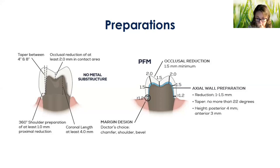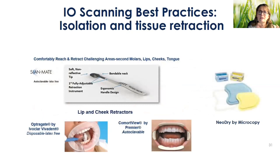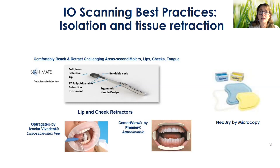You have to be able to see a definitive finish line for the scanner to pick it up and for the lab to fabricate a crown that fits to that finish line. There was a question earlier about subgingival preparations and routinely seeing margins coming up short — that's probably why. There might be a little moisture, some fluid at the sulcus. I'm very much a proponent of a double cord technique. But before I get to the scanning part, I really want to make sure the area is clear and dry.